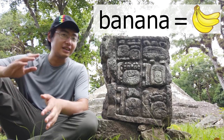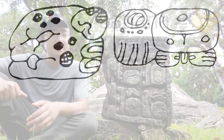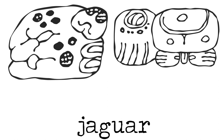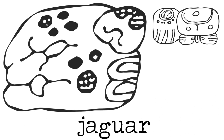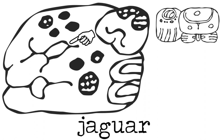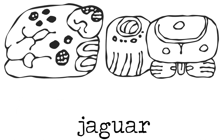Here is a Mayan example: both of these glyphs mean the word 'jaguar.' You can clearly see the one on the left is a logogram, because without even basic knowledge of Mayan you can see it resembles a jaguar, complete with teeth, eyes, and even an ear. However, the downside is that you will never know how to pronounce this word.